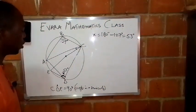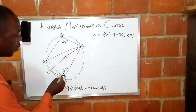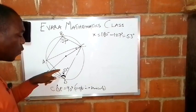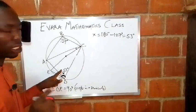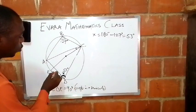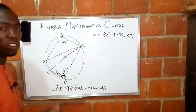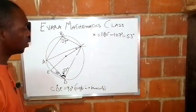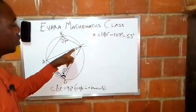So now if the whole of this angle is 90 and we have only this one to be 53, so if you subtract 53 degrees from 90, this angle would be what? 37 degrees.